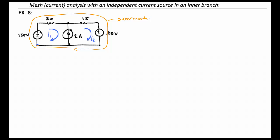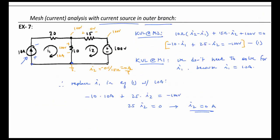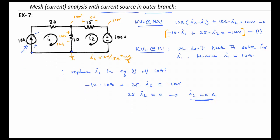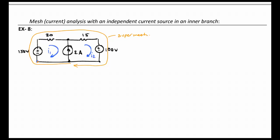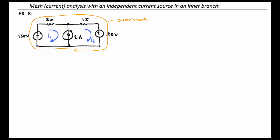In the last example, the one where we had the current source on the outer leg just participating in mesh 1, we found that it simplified our 2 equation 2 unknown system to a 1 equation 1 unknown, because I1 was already decided for us, being 10 amps. Now, we have a constraint, but it's not that either I1 or I2 is equal to 2 amps.